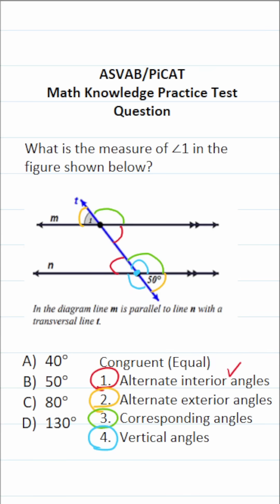As far as answering this question goes, we can see that this angle of 50 degrees and the measure of angle one are a pair of alternate exterior angles. Therefore, the measure of angle one is going to be 50 degrees. So the answer is B.